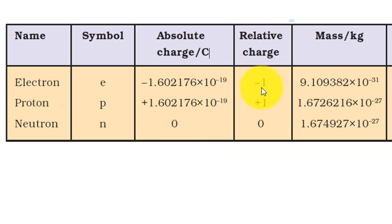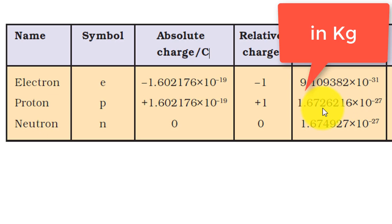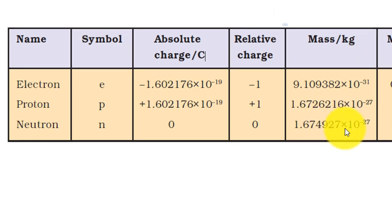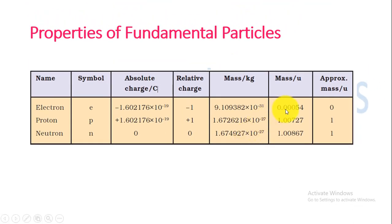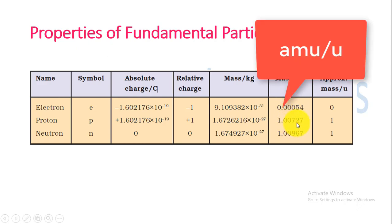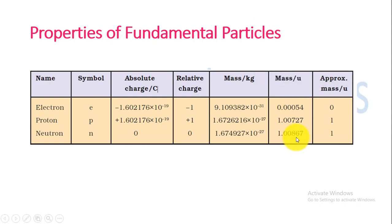Mass of electron is 9.109382 into 10 raised to power minus 31, proton is 1.6726216 into 10 raised to power minus 27, and neutron is 1.674927 into 10 raised to power minus 27. In atomic units, electron is 0.00054, proton is 1.00727, and neutron is 1.00867. So approximately in unified mass units, electron is 0, proton is 1, and neutron is 1.